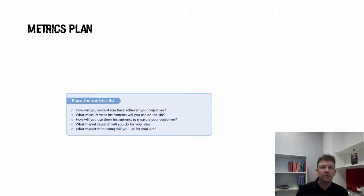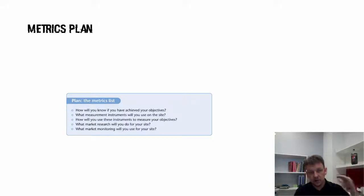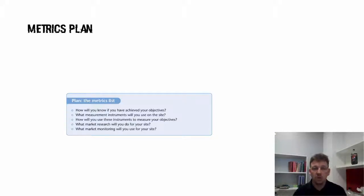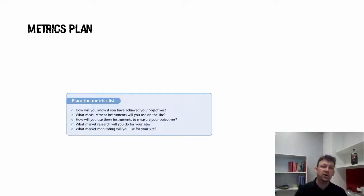So talk metrics for a moment. The metrics plan is actually quite short because it's a case of: what is my objective? How do I measure it? What instruments am I going to use? What data can I have? What market research would support it? What do I need to know in order to answer: did I achieve my objective? Document it, write it down, and then collect that data on the way so you can answer that question.